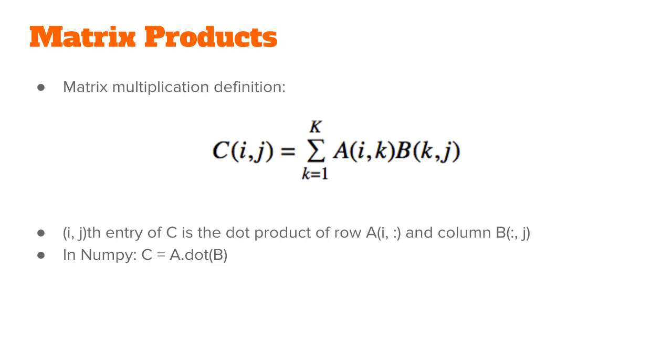In other words, Cij is the dot product of the i-th row of A and the j-th column of B. Because of this, we actually use the dot function in NumPy, and that does what you recognize as matrix multiplication.